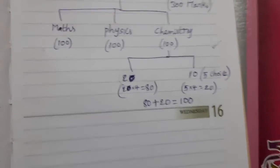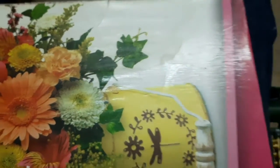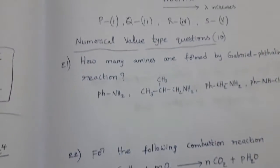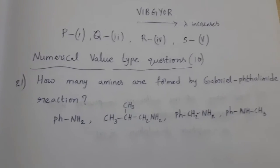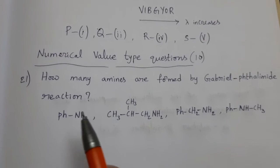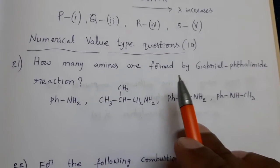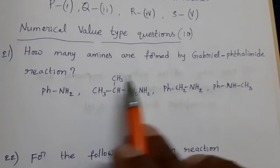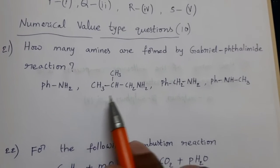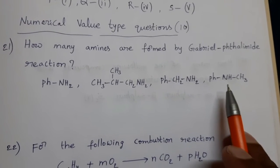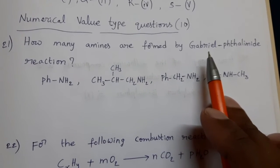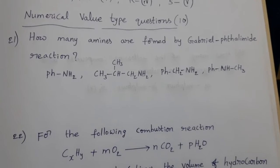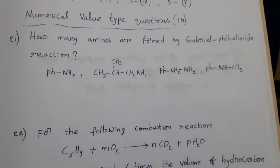Now, till now we completed 18 questions in that multiple choice questions. Now see the numerical value type questions. First one is, how many amines are formed by Gabriel phthalimide reaction? 4 amines are given. In this,